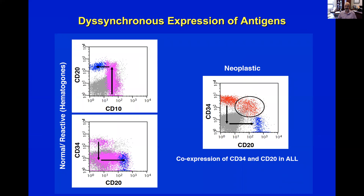The fourth thing tumors do is express their markers dyssynchronously. The hematogons — little baby B cells in marrow — show that CD34 is expressed in a small subset, then abruptly dropped, and eventually CD20 is gained as a marker of mature B cells. CD34 is dropped before CD20 is gained — that's proper synchronization. But in this case, a subset of the red population expresses both CD34 and CD20 simultaneously — that is dyssynchronous expression, an ALL not following the normal maturation pattern.